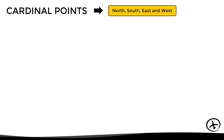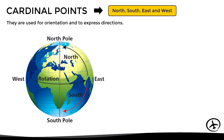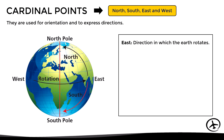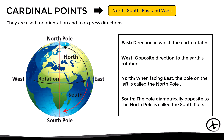Now that we know some basic facts about the earth, we can look at the cardinal points. The main ones are north, south, east, and west. These points are used for orientation and to express directions on the earth's surface. East represents the direction in which the earth rotates, and therefore west represents the opposite direction. North is the pole on the left when we are facing east, and south is the pole diametrically opposite to the north pole.